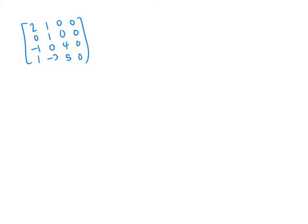Let's actually work it out this time. We'll start by multiplying the first row by 1/2, giving us (1, 1/2, 0, 0) across the top. The second entry of the first column already has a 0, so we leave that alone. Multiplying the first row by 1 and adding to the third row gives us (0, 1/2, 4, 0). Then multiplying the first row by -1 and adding to the fourth row gives us (0, -7/2, 5, 0).